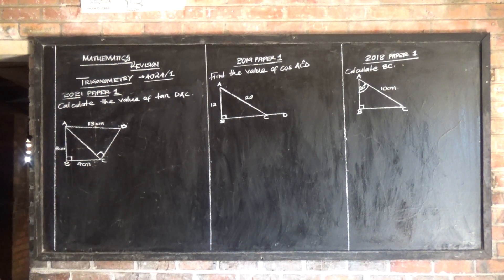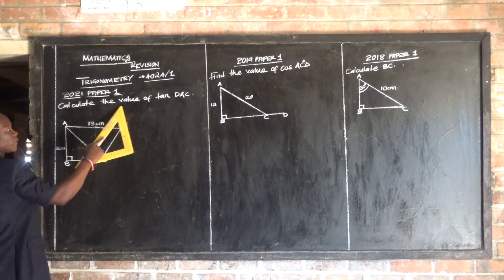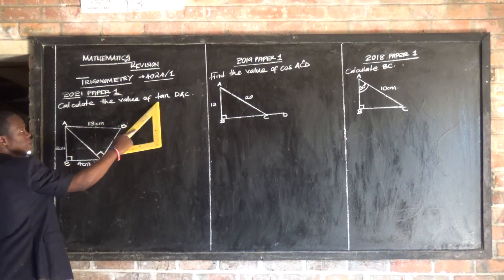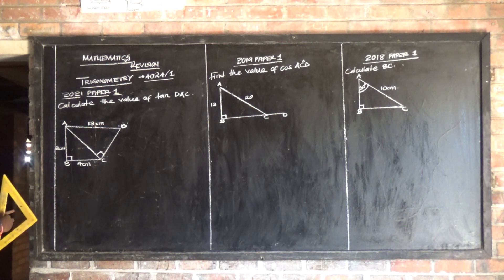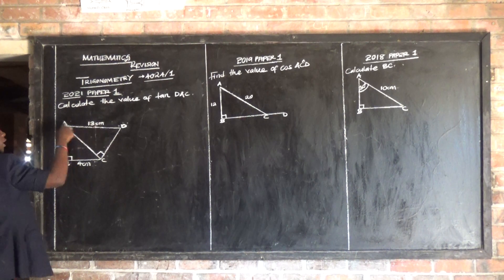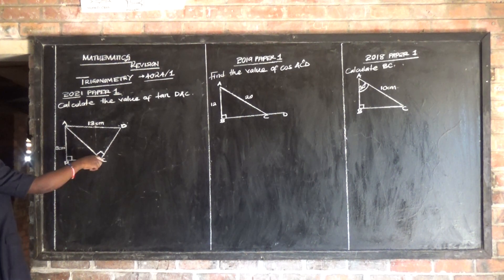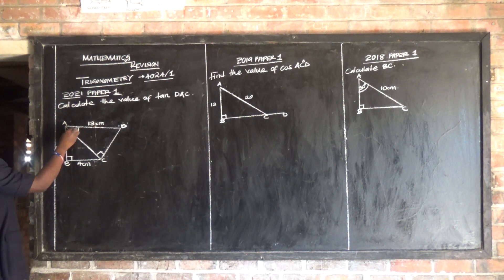Let's look at the 2021 paper. It says calculate the value of angle DAC. So the one has to find angle DAC, right? This is the angle we have to find.